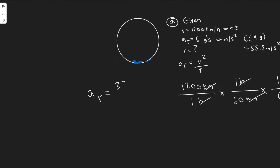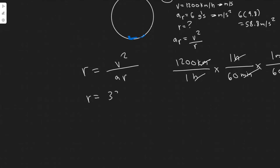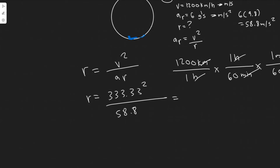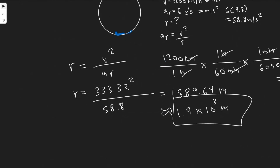Now we rearrange the formula to solve for radius: r equals v squared divided by a_r. Plugging in 333.33 squared divided by 58.8, we get approximately 1889.64 meters. So the minimum radius is about 1.9 times 10 to the 3 meters, or roughly 1900 meters. That's our answer to part A.